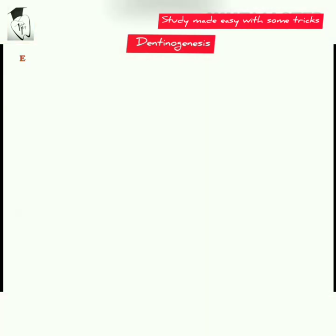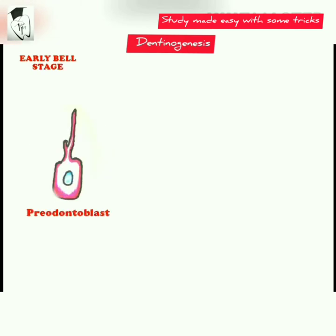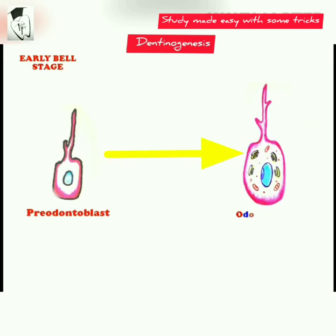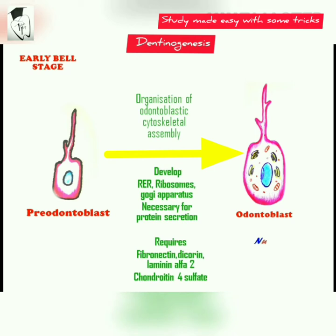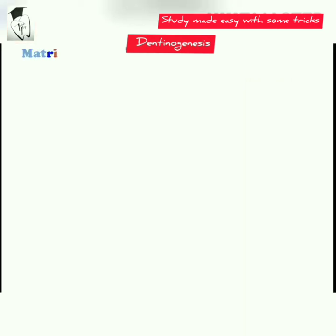There is organization of the odontoblastic cytoskeletal assembly. The pre-odontoblast elongates and develops rough endoplasmic reticulum, ribosomes, and Golgi apparatus necessary for protein secretion, which requires fibronectin, decorin, laminin, alpha-2 chondroitin sulfate, etc. The nucleus becomes polarized and shifts to a position away from the inner enamel epithelium.